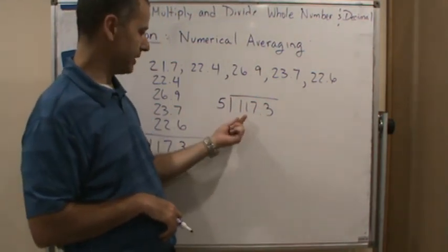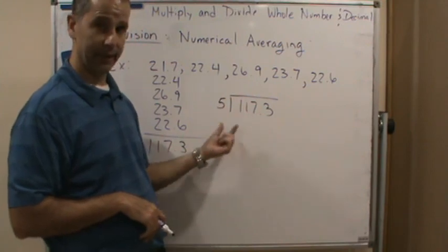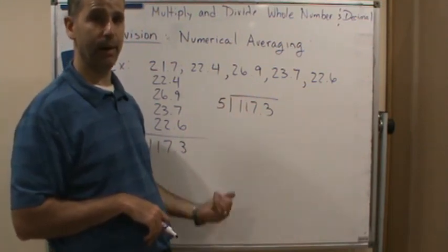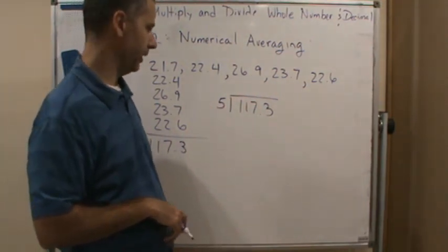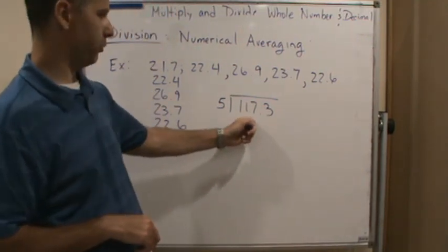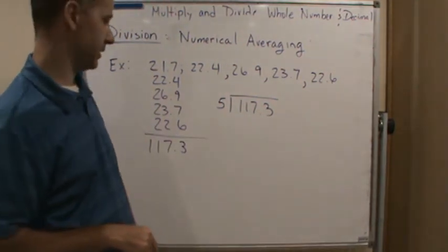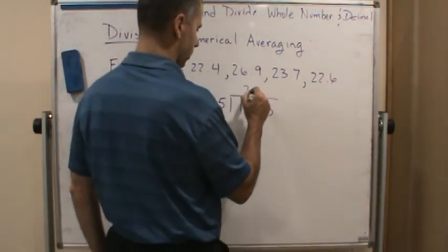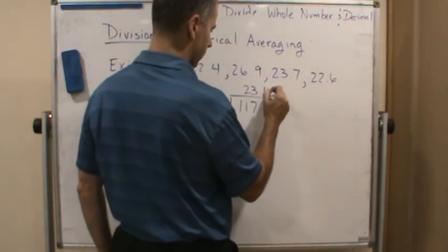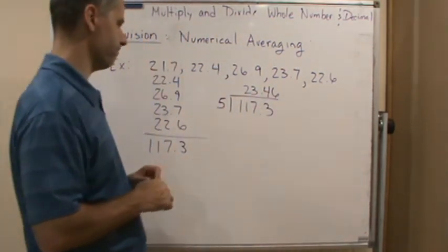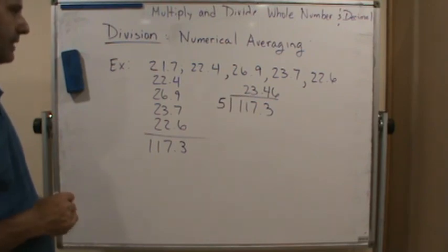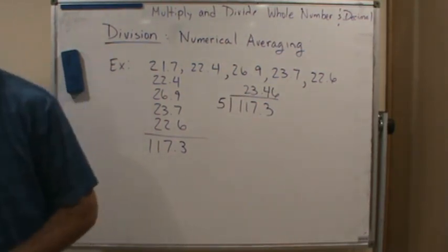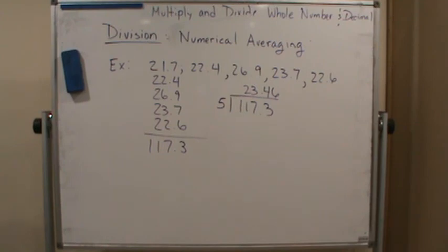So I take 11.73 and double it, and that's going to be the answer if I divide it by 5. So that's going to be 23.46. So I'm going to get 23.46. And that's the average miles per gallon. Let me check the answer, see if I get the right answer. Yes, 23.46.